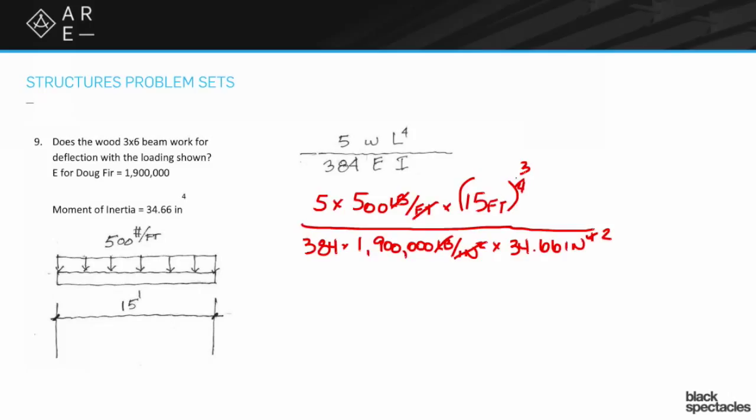So you get feet cubed over inches squared, and we know the answer is going to be in inches. We need to convert this feet cubed to inches. We have 12 inches per foot, and it's cubed, which gives us inches cubed over inches squared, which in the end gives you inches.